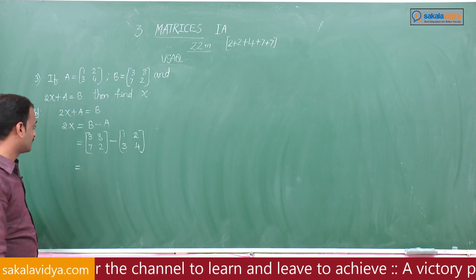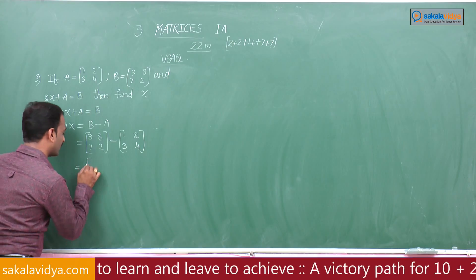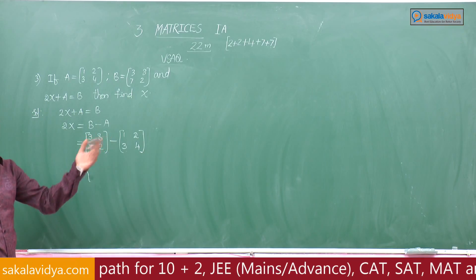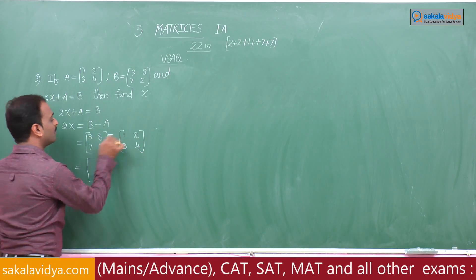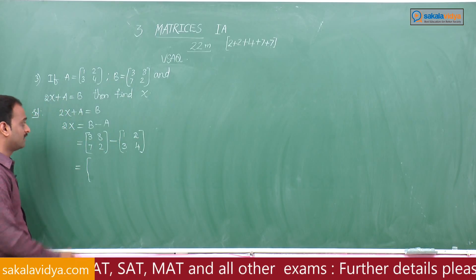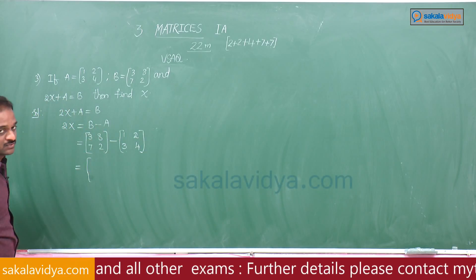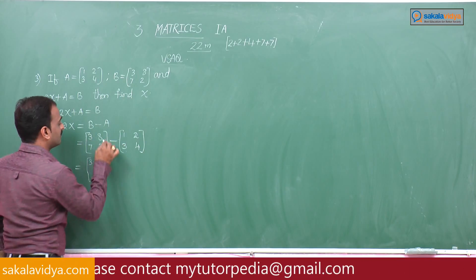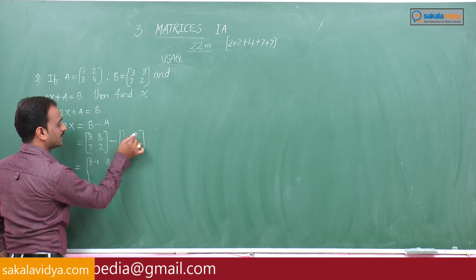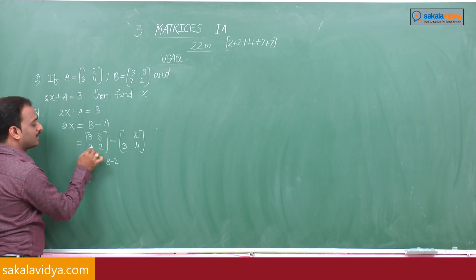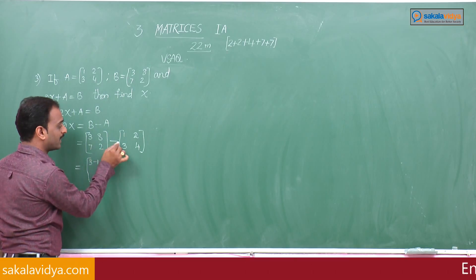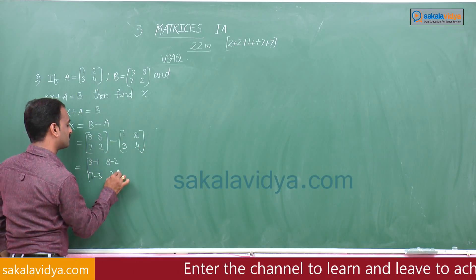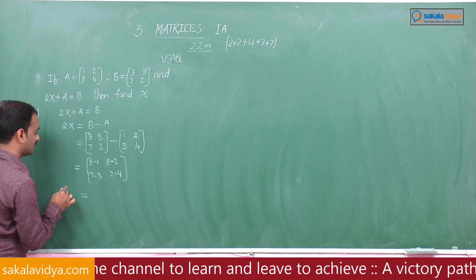Subtraction of these two matrices is done by taking the difference of corresponding elements. First row, first element: 3 minus 1. First row, second element: 8 minus 2. Second row, first element: 7 minus 3. Second row, second element: 2 minus 4.